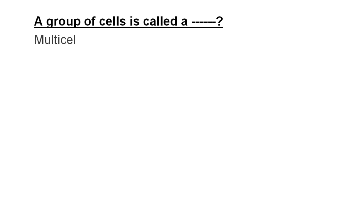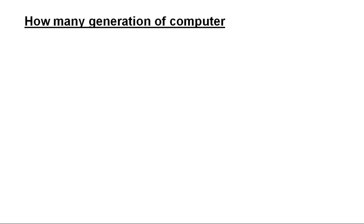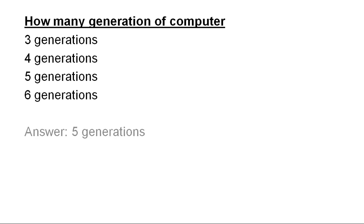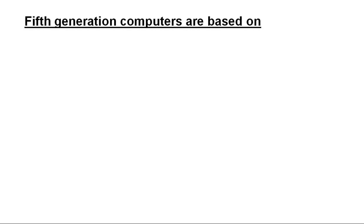A group of cells is called a multi-cell, cell cluster, chart, or cell range. The correct answer is cell range. How many generations of computers are there? Options: 3, 4, 5, or 6 generations. Computers have 5 generations.